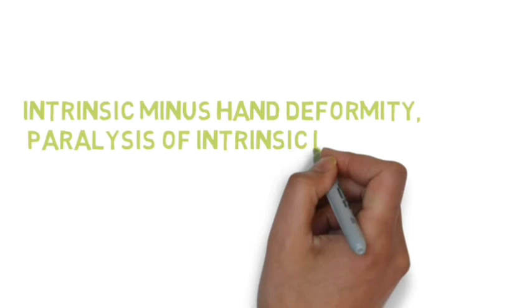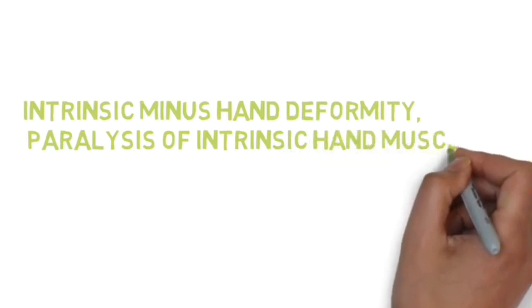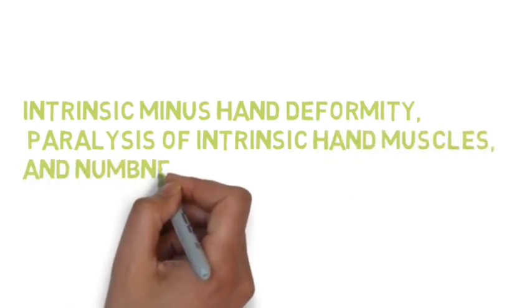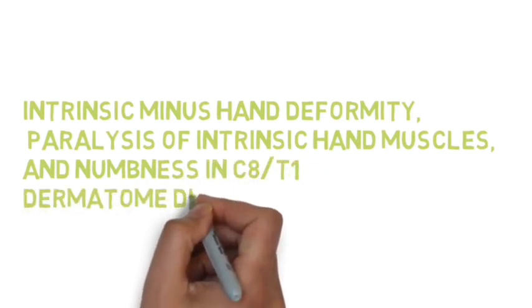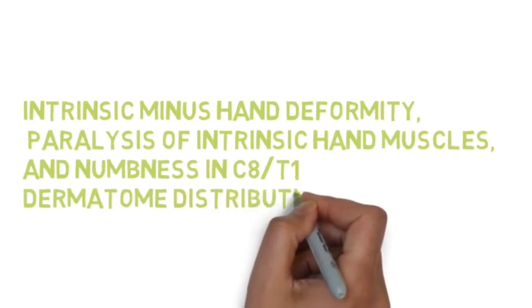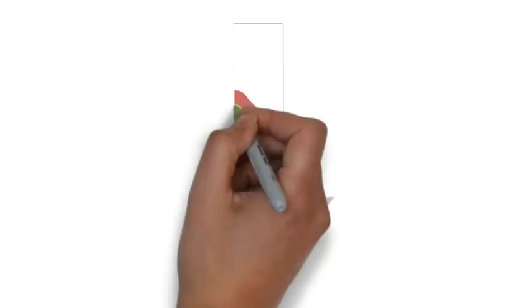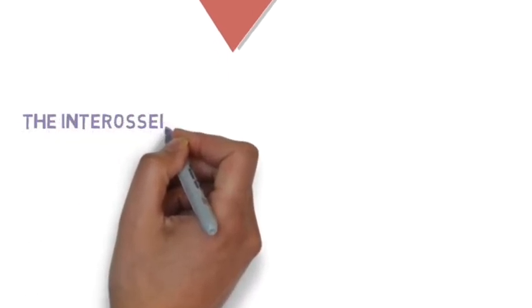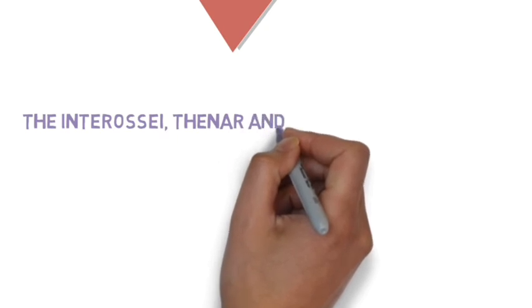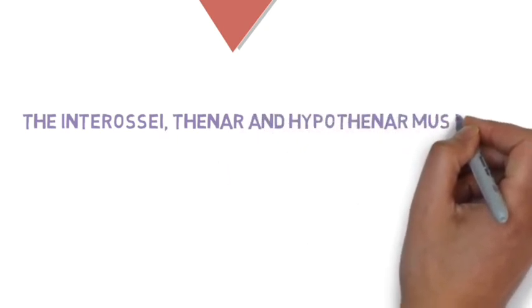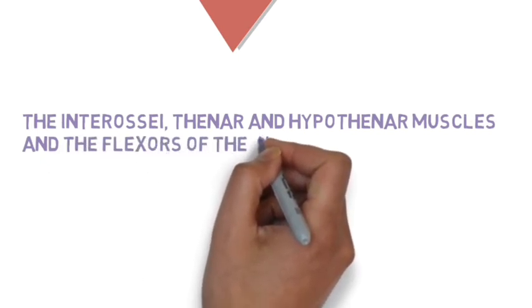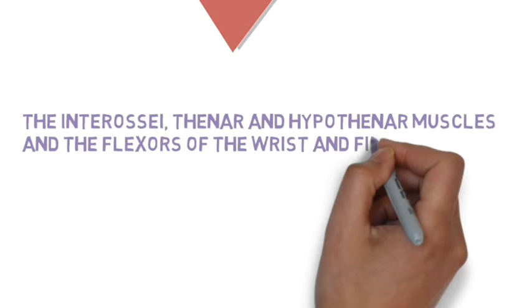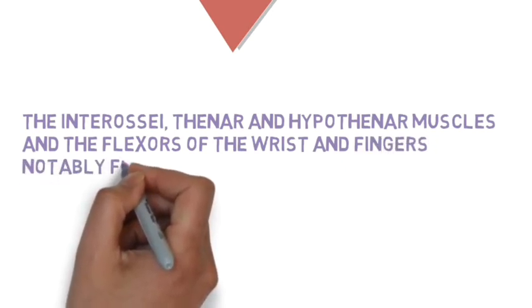The sensory aspect is also affected, as the C8 and T1 dermatomes are affected. The muscles which are involved here are the interossei, thenar and hypothenar muscles. Because C8 and T1 also give the medial root of the median nerve, notably flexor carpi ulnaris and the ulnar half of flexor digitorum profundus are also affected.